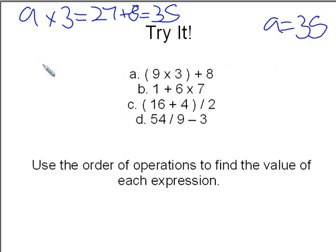B, 1 plus 6 times 7. There are no parentheses, so multiply from left to right. 6 times 7 equals 42. 1 plus 42 equals 43. B equals 43.